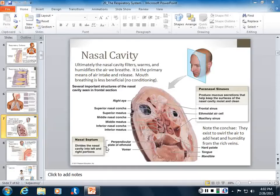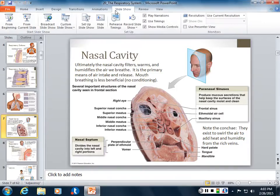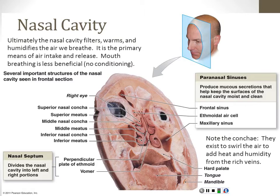The respiratory system, the respiratory tract, really begins at the nasal cavity. In the evolved, natural way for us to breathe, air first enters the body through the nose, through the nares of the nose, and then travels through the nasal cavity.